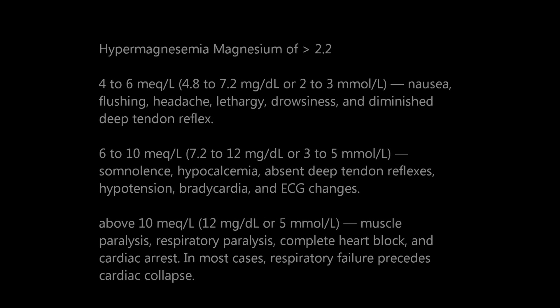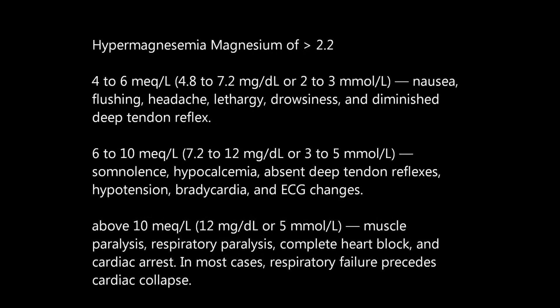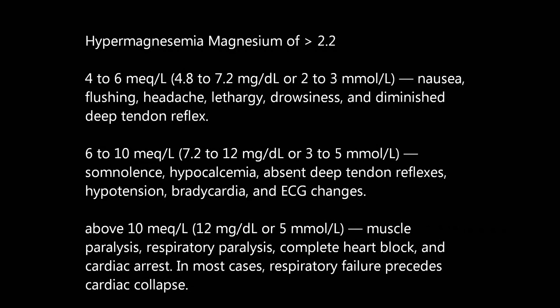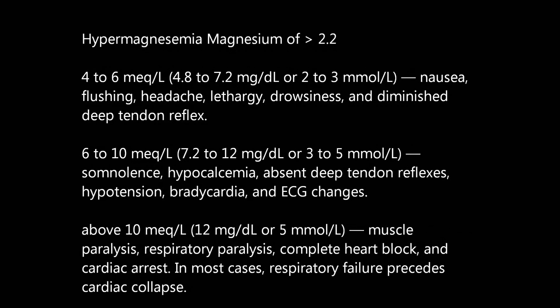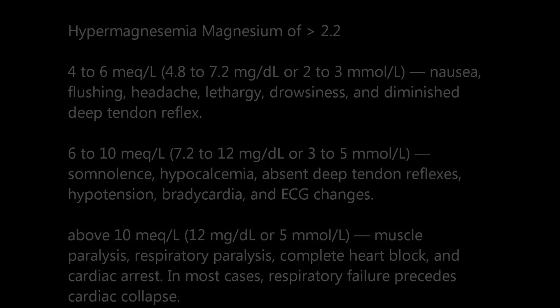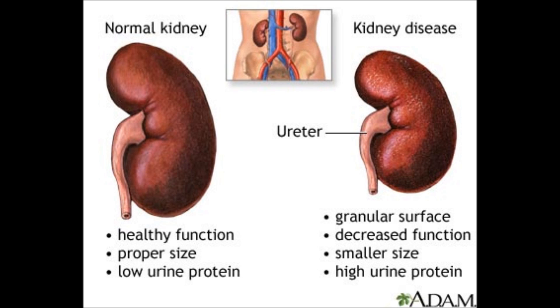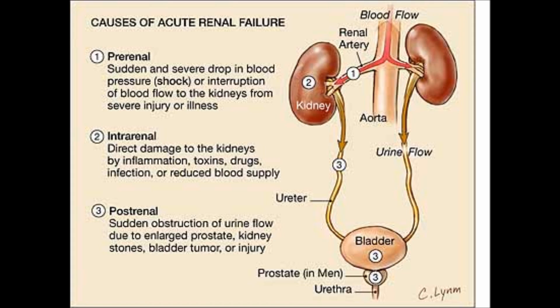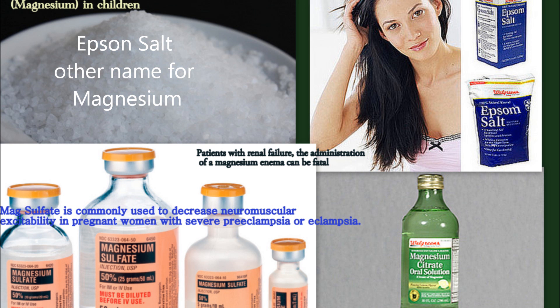If you have a magnesium of more than 2.2, we call that hypermagnesemia. The causes of hypermagnesemia include number one, renal failure, and number two, excessive intake of magnesium — through the mouth, through IV, or through laxatives.